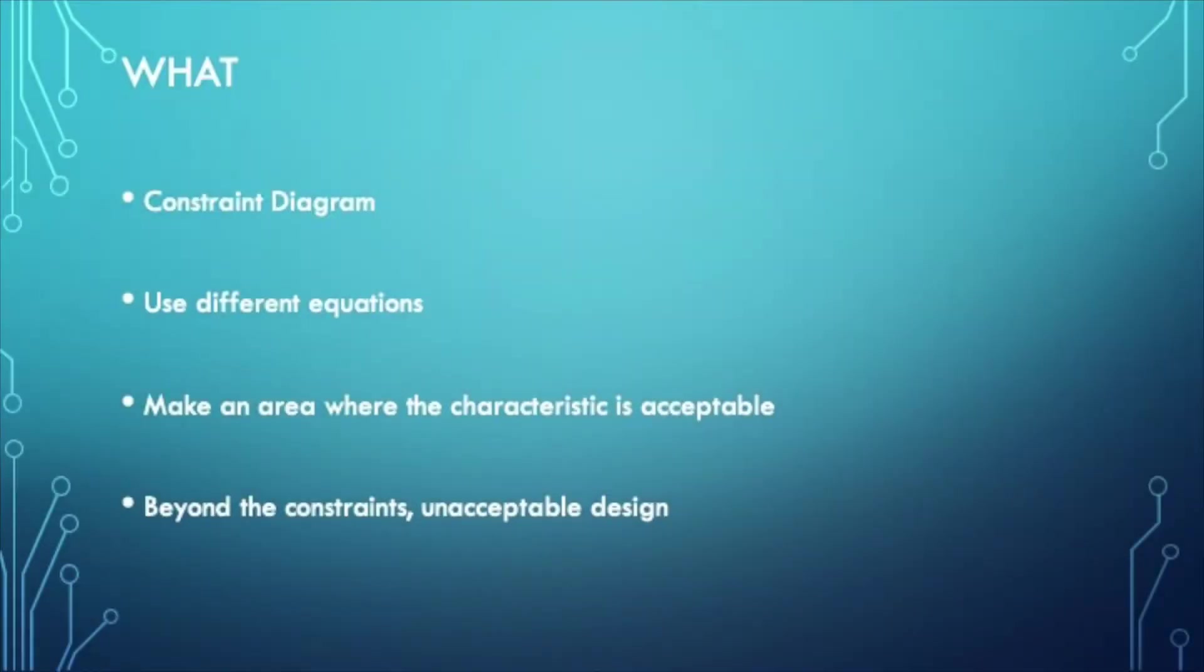Okay, so first we're going to cover the what. As the name suggests, constraint diagrams are diagrams or plots or graphs that use different equations and make an area where a certain characteristic or more than one are going to be acceptable in any design. As I said, in this case we're going to use aircraft design.